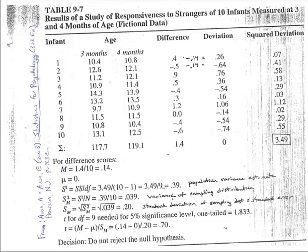To translate this back into the original units, we take the square root of 0.039, which is approximately 0.2. That 0.2 is the standard deviation of the sampling distribution — more commonly known as the standard error. It tells us that about 68% of the time, scores around the population mean difference of 0 (when the null hypothesis is true) will be 0.2 above or 0.2 below due to random sampling fluctuation alone.